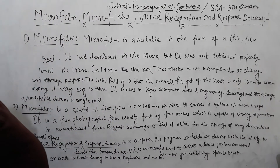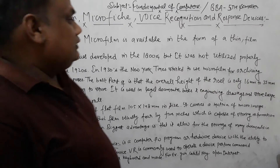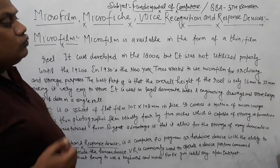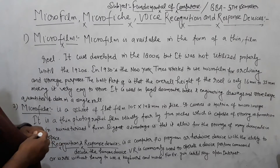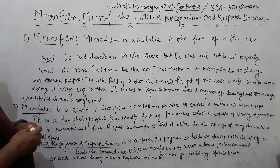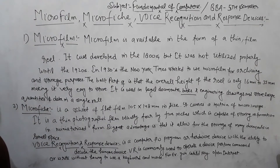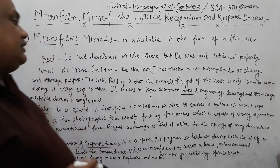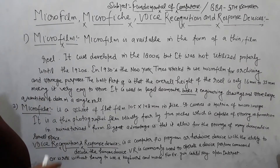In the 1930s, the New York Times started using microfilm for archiving and storage purposes. The overall height of a reel is only 16mm to 35mm, making it very easy to store. It is used in legal documents, books, and engineering drawings to store large quantities of data in a single reel.